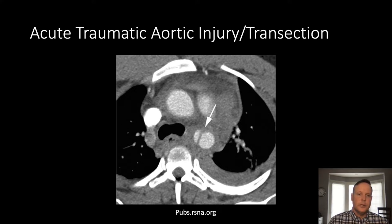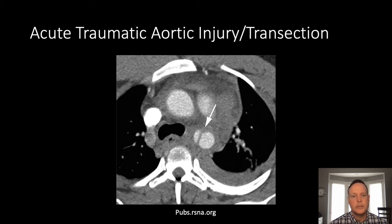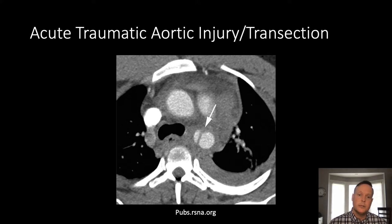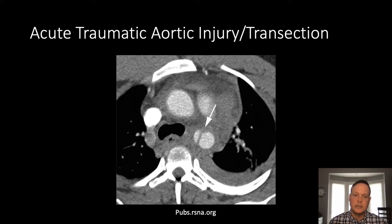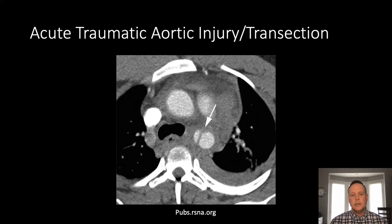This is an example of an injury to the aorta at the distal aortic arch and proximal descending aorta at the level of the ligamentum arteriosum, which is a common location because of its tether point. The ascending aorta is also a common location for traumatic injury, but because of the high mortality, the patient doesn't often get to the scanner. Another common location is the tether point at the diaphragm at the aortic hiatus.